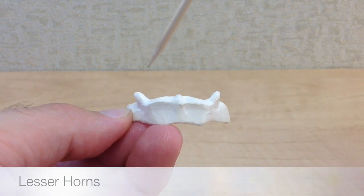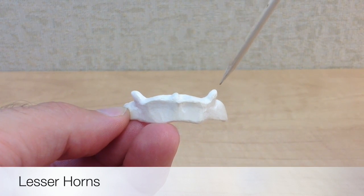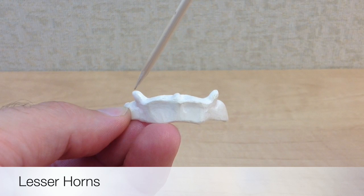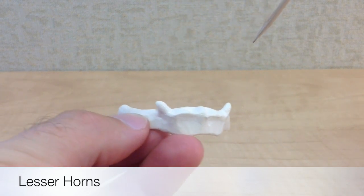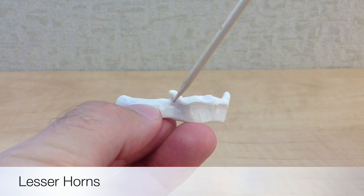And finally, the lesser horns. These are the smaller paired horny bumps that are located on the lateral sides of the body.